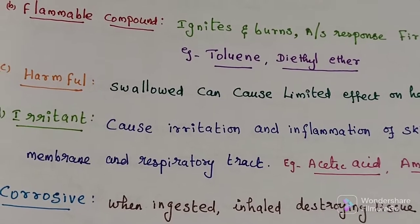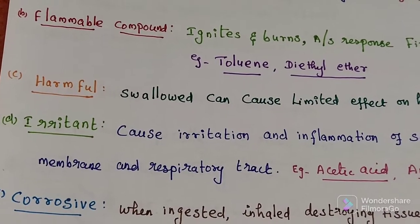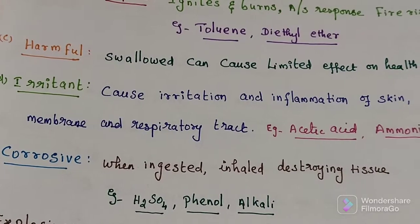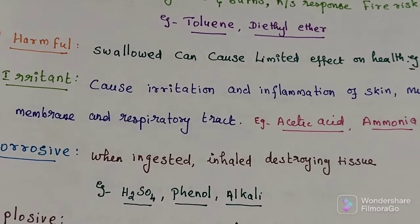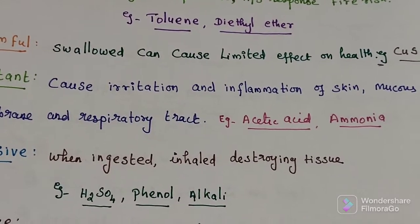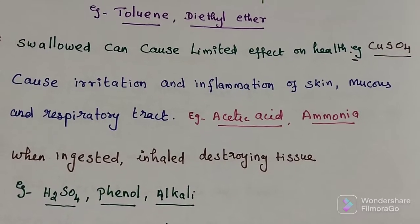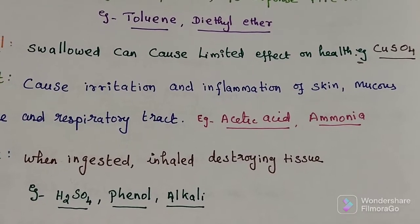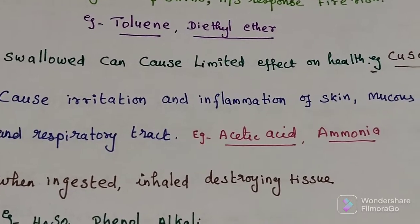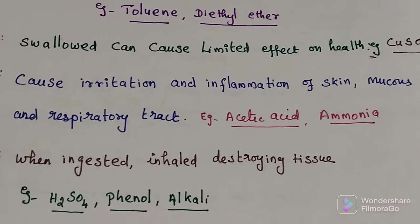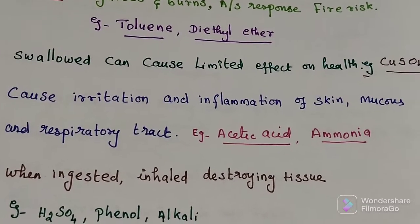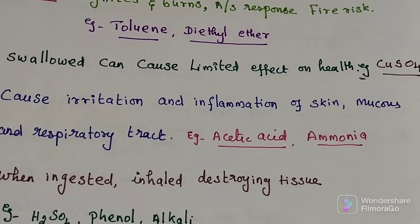The next type is irritant. A chemical which can cause irritation or inflammation of the skin, mucous membrane, and respiratory tract. Examples include acetic acid and ammonia solution.